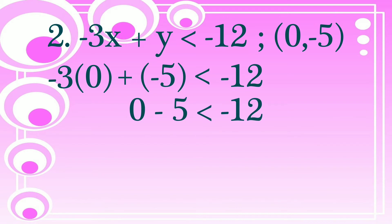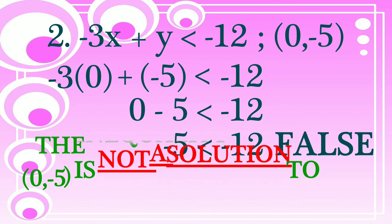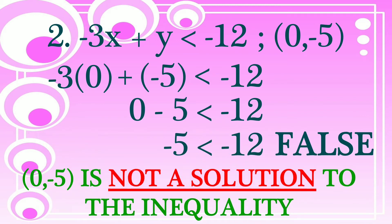Then let's solve. We have negative 3 times 0 equals 0, minus 5 is less than negative 12. So 0 minus 5 is negative 5. Is negative 5 less than negative 12? Negative 5 is actually greater than negative 12, so this is false. Therefore, (0, negative 5) is not a solution of the inequality negative 3x plus y is less than negative 12.